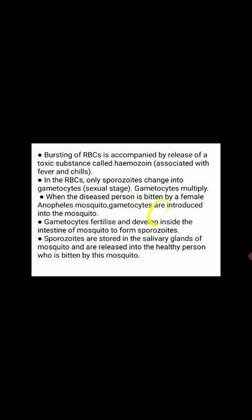Inside the RBC, sporozoites change into gametocytes, which represent the sexual stage. The gametocytes multiply when the infected person is bitten by a female Anopheles mosquito, and gametocytes are introduced into the mosquito. The gametocytes fertilize and develop inside the intestine of the mosquito to form sporozoites, which are stored in the salivary gland of the mosquito and are released into the next healthy person who is bitten.